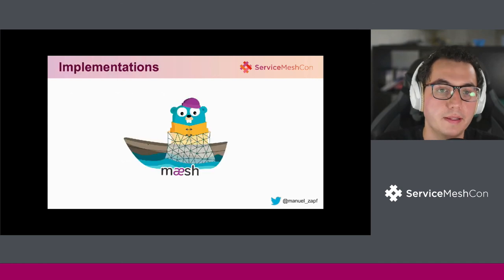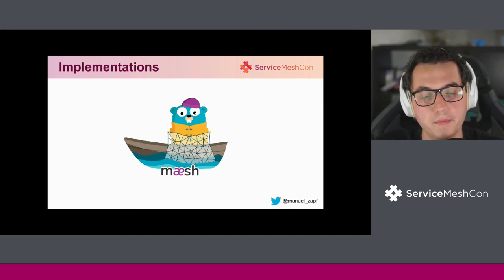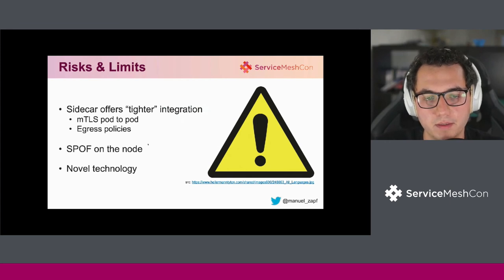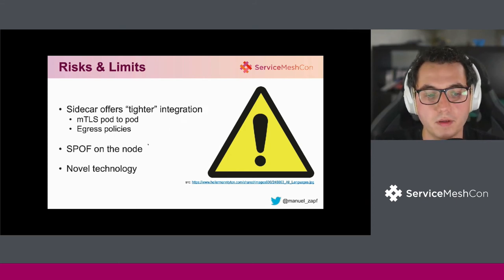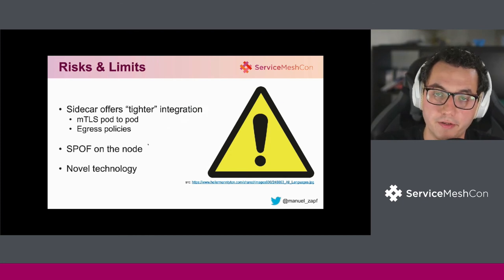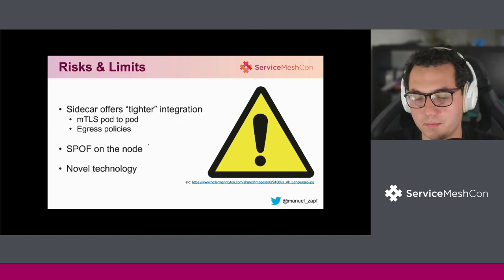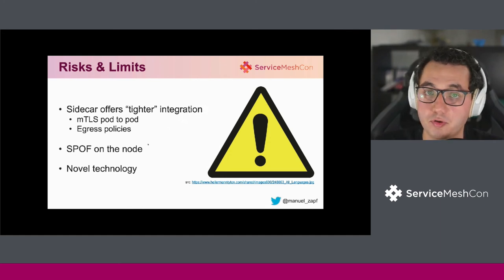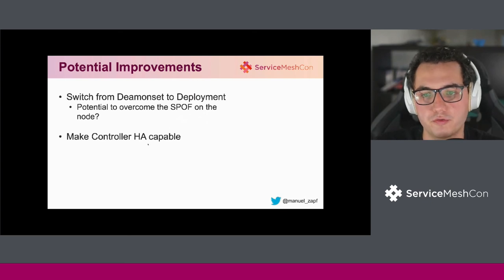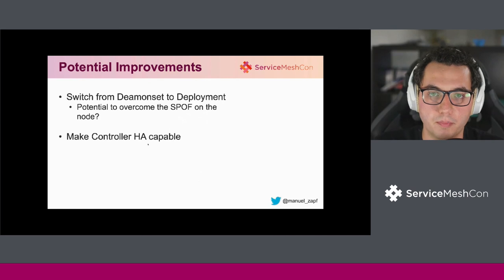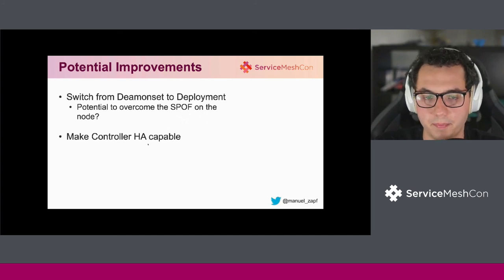However, be aware. Sidecar offers tighter integration — for example, mTLS from pod to pod is possible, and egress policies are well possible because IP tables are in place. Also, the one-per-node approach brings a single point of failure, so there are some risks. Additionally, this approach is still kind of novel, so it's not as proven as the well-known sidecar approach. That said, we can still improve things — we could switch from daemon sets to deployments to potentially overcome the single point of failure on the node, and we could work on making the controllers highly available, though there are still other topics that will need help.